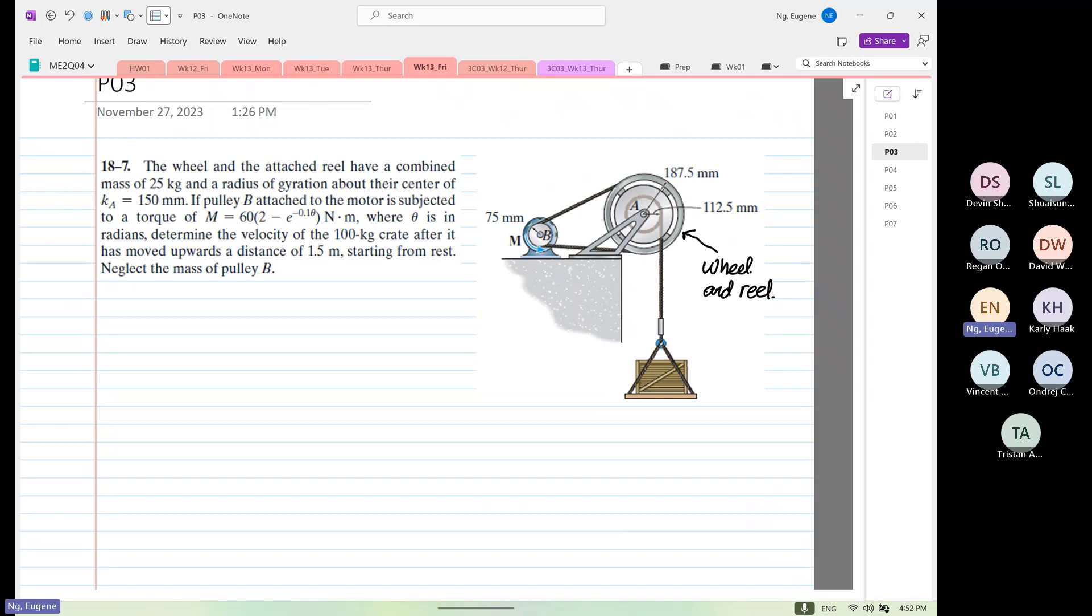If pulley B attached to a motor is subjected to a torque M is equal to 60 times 2 minus e to the power of negative 0.1 theta newton meter, where theta is in radians. Determine the velocity of the 100 kilogram crate after it has moved upwards 1.5 meters starting from rest.